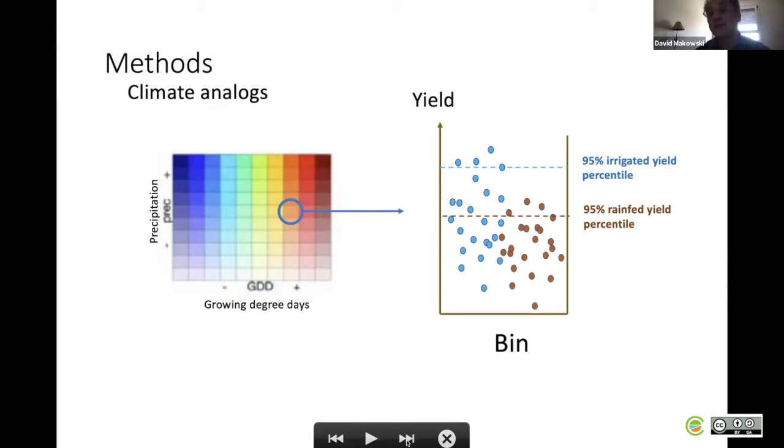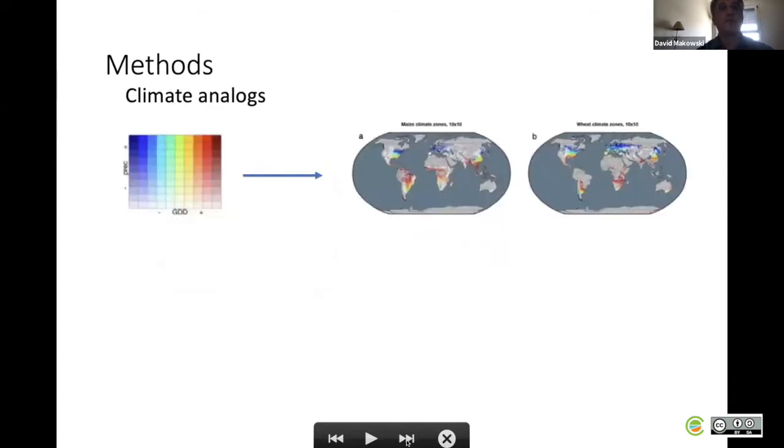We repeated this approach for all bins, so we got 100 yield gaps. These 100 bins can be seen geographically on the map on the right. You can see the corresponding bins for maize and wheat on the two maps here.